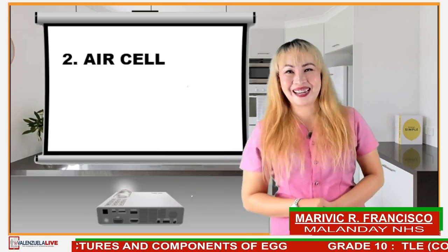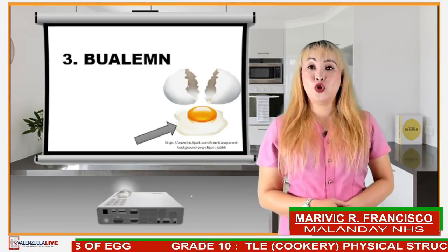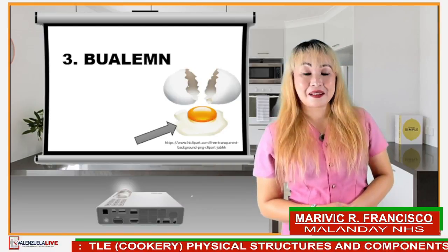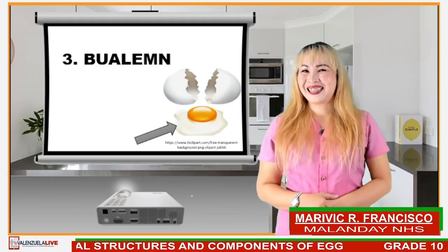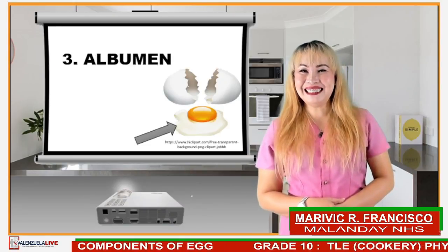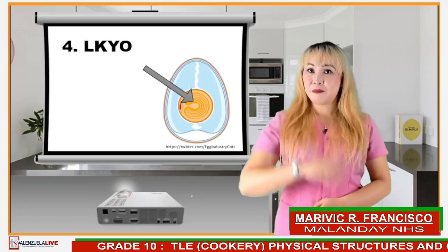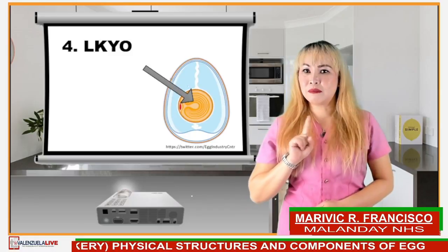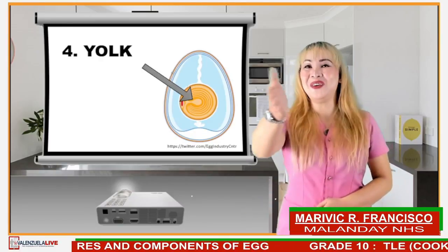You are correct. Good job. Number three — B-U-A-L-E-M-N. What is the word? If your answer is albumin, then you are correct. Good job. Number four — L-K-Y-O. If your answer is yolk, you are correct.